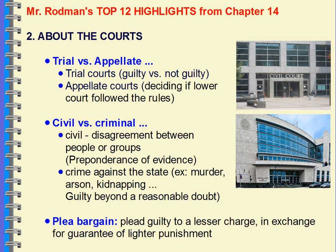Looking at trial courts versus appellate courts — state courts tend to handle a lot of the civil and criminal cases, while federal courts handle a lot of the appellate cases. In trial courts, you're determining whether or not someone is guilty. In appellate courts, you're trying to figure out: is it constitutional? Were there violations of the rules and procedures in terms of how that case was handled? That is a huge difference between trial versus appellate courts.